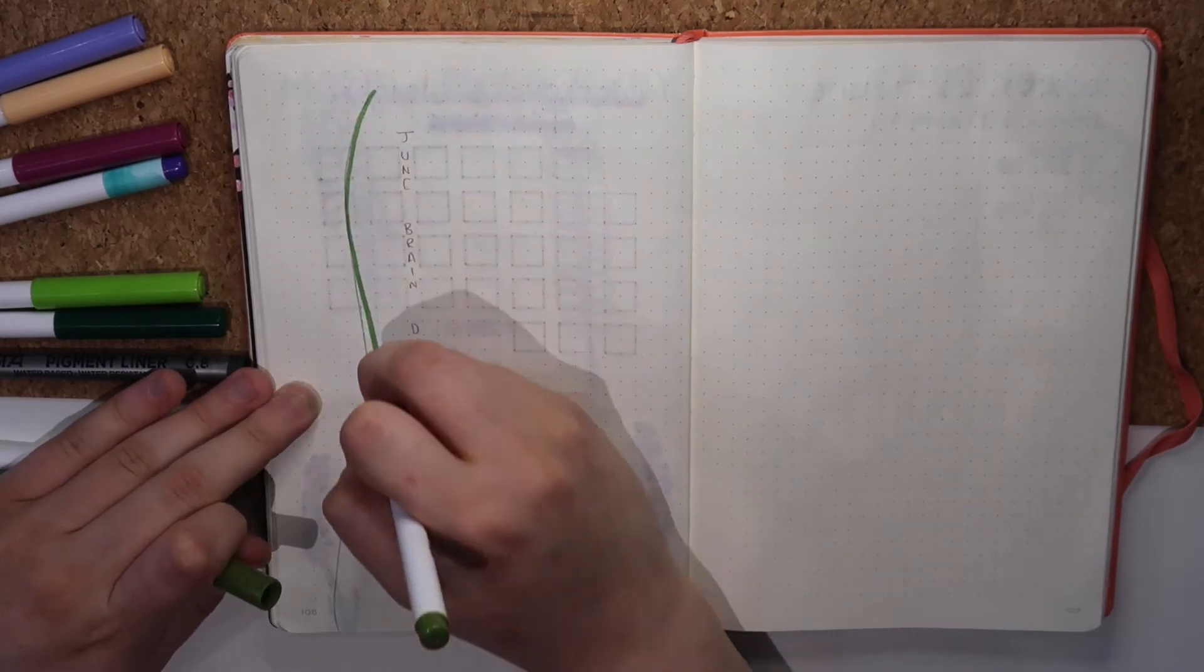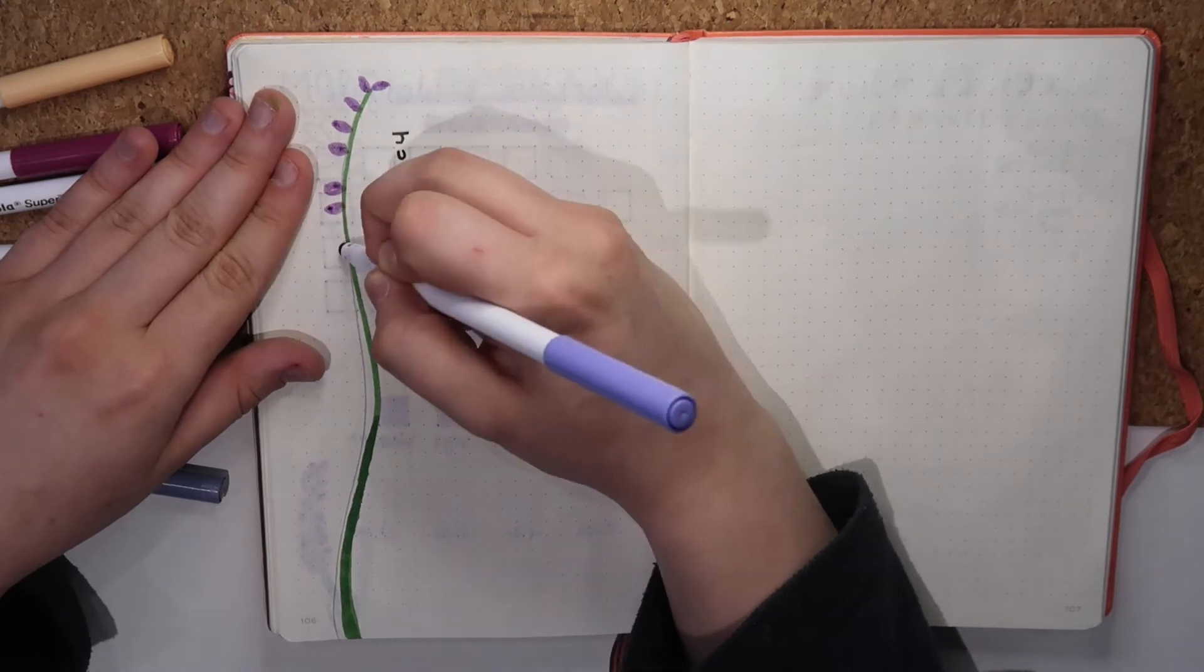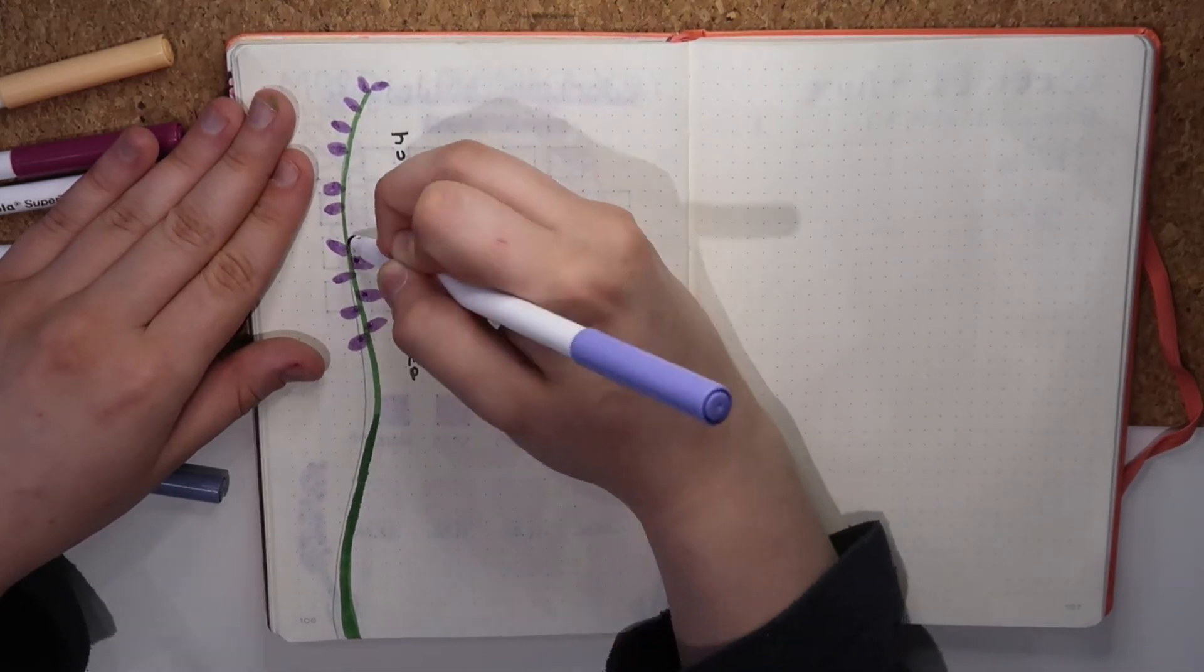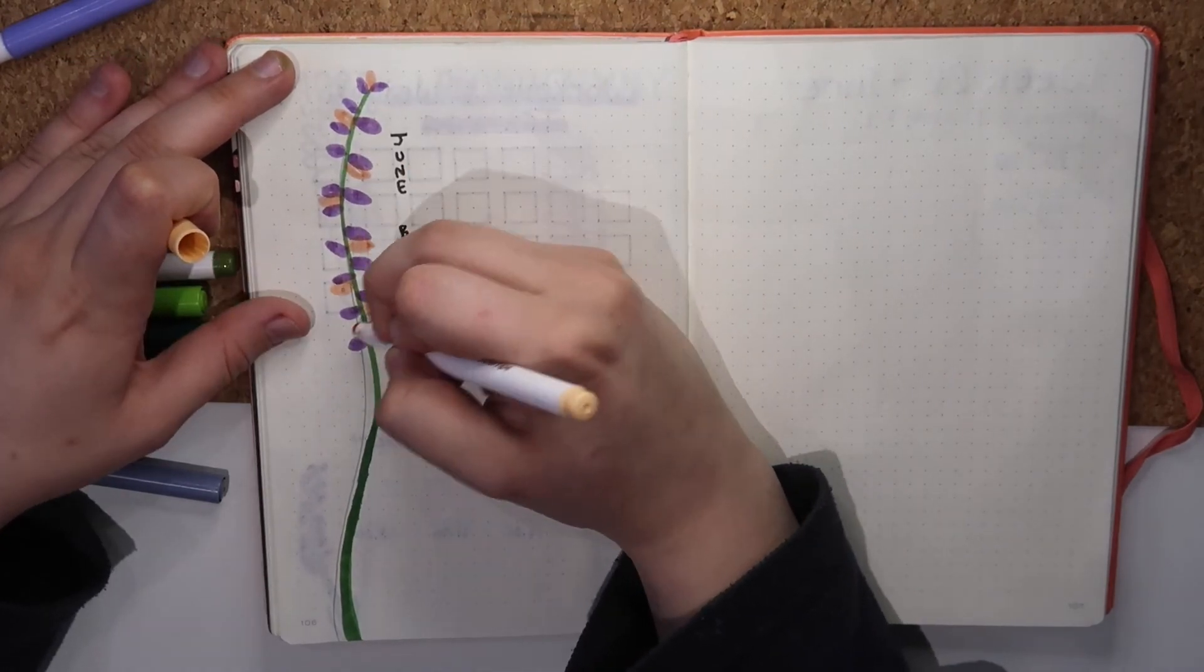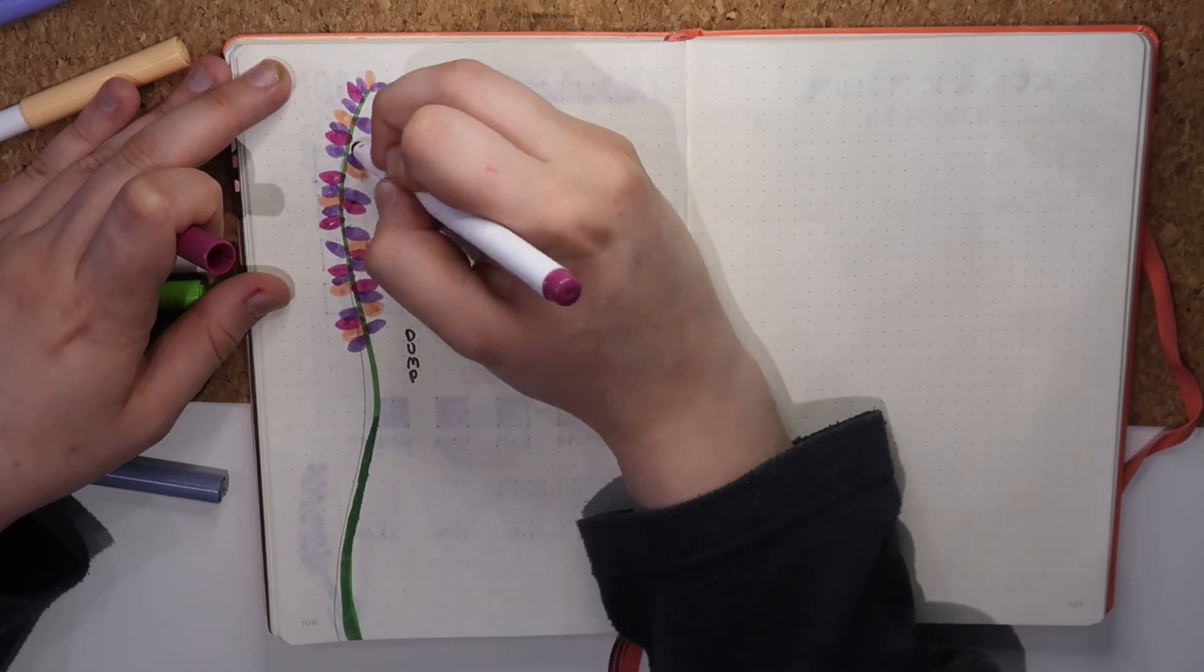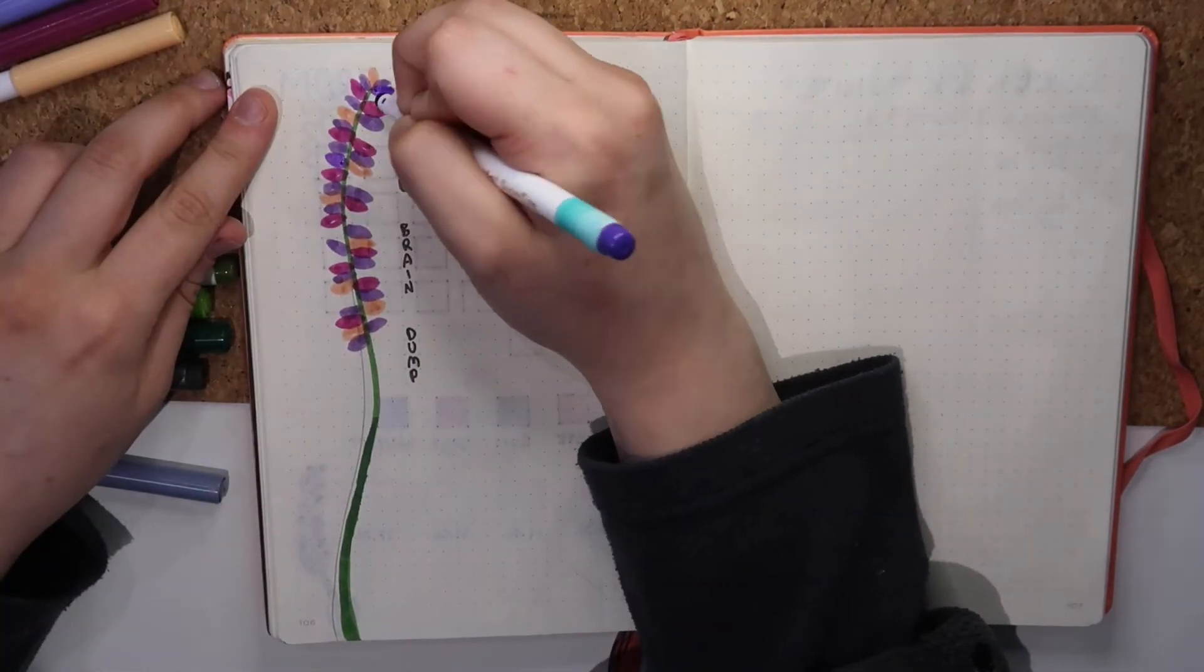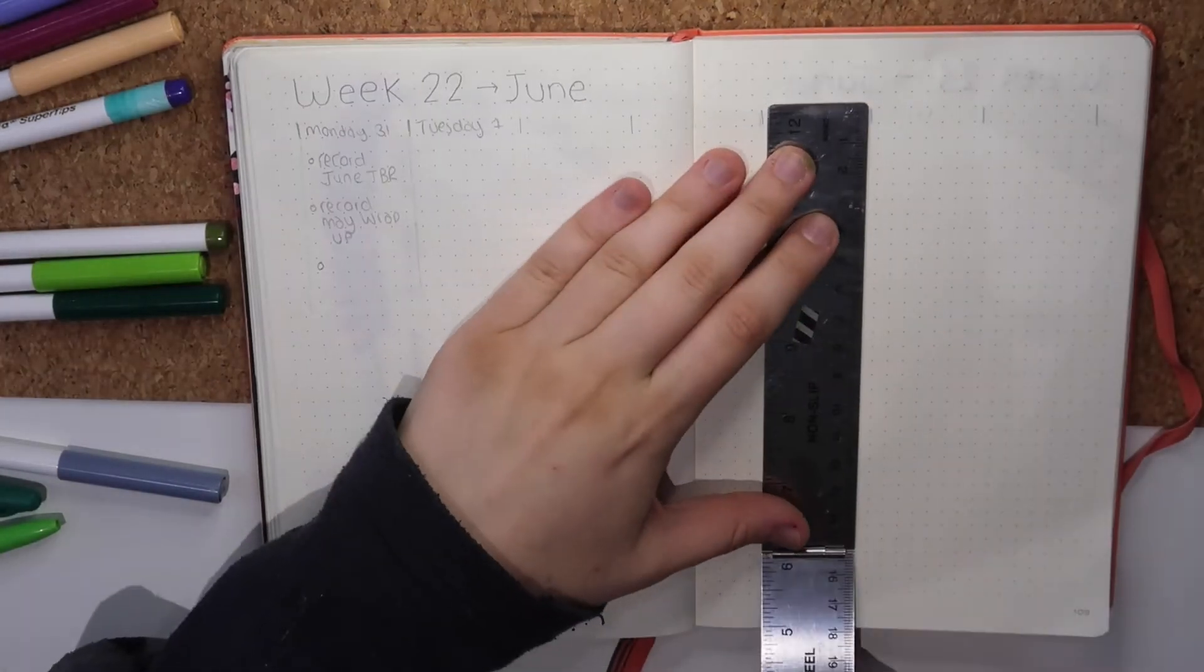Now my brain dump page. This is for anything and everything I need it to be, which normally ends up being many notes and many lists. So I decided to just keep it simple, draw one big lavender and write brain dump next to it. It's simple but it does the job.